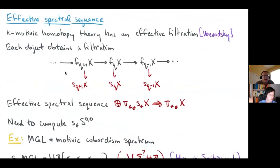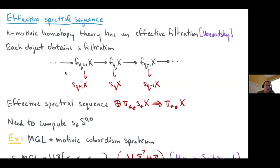For the remainder of the time I want to discuss a different approach to computing stable homotopy groups — the effective spectral sequence. This approach is complementary to the Adams spectral sequence: certain features are easily seen in the Adams context and others in the effective context, and putting both perspectives together gives a much better overall picture.